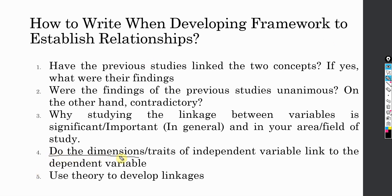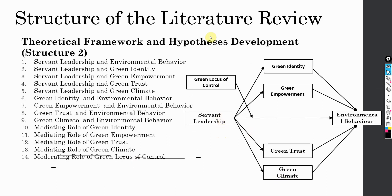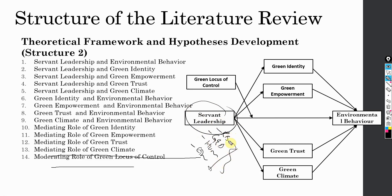To do so, you have to link the dimensions and traits of one variable with the other variable. A detailed session on the same is also available on the channel. What you do is link the dimensions — let's say we've got servant leadership. Servant leadership is all about relationship building, growth and development of employees, being humble, being ethical, and there are other dimensions as well. You have to look into how you have operationalized servant leadership — you can't just include all the dimensions. Then you try to link these sub-dimensions with environmental behavior or other variables if you cannot find any existing research.